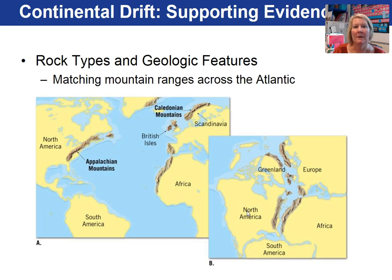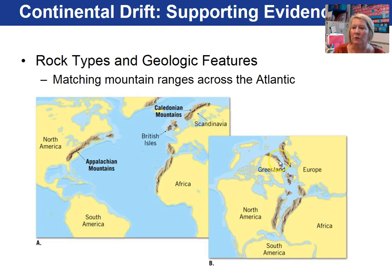Additional evidence in support of continental drift was the matching mountain ranges on continents. If we close up the Atlantic Ocean and bring the continents back together, scientists found that the mountain ranges are similar — similar rock type, similar structures.